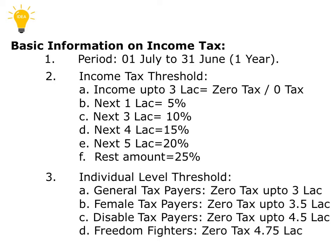Individual-level income tax thresholds are also defined. For general taxpayers, zero tax is up to 3 lakhs. For female taxpayers, zero tax is considered up to 3.5 lakhs. For disabled taxpayers, zero tax is considered up to 4.5 lakhs. And finally, for freedom fighters, zero tax is up to 4.75 lakhs.